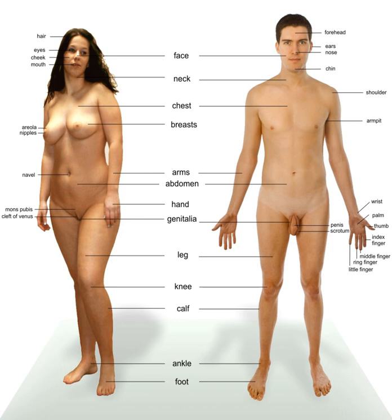A common symbol used to represent the male sex is the Mars symbol—a circle with an arrow pointing northeast. The symbol is identical to the planetary symbol of Mars. It was first used to denote sex by Carl Linnaeus in 1751. The symbol is often called a stylized representation of the Roman god Mars's shield and spear.